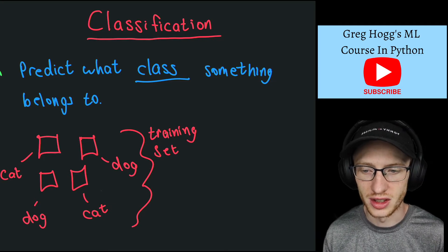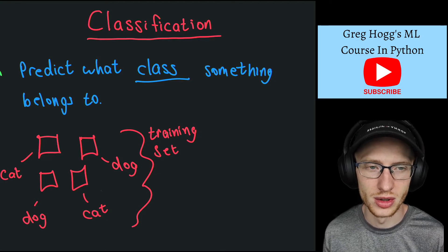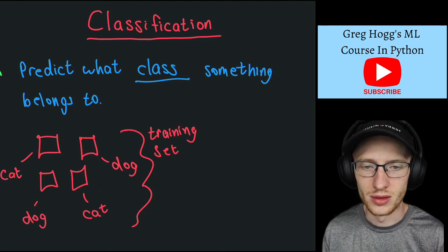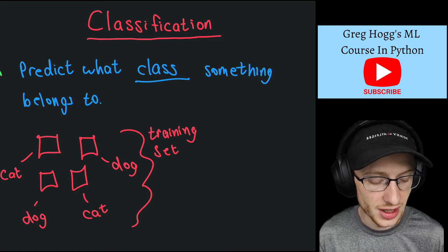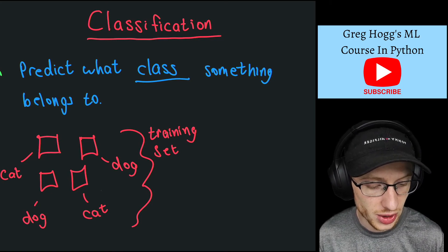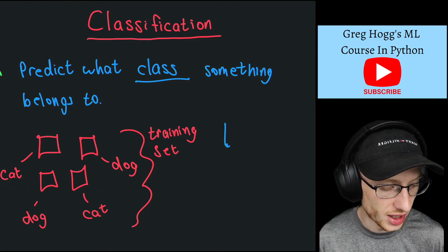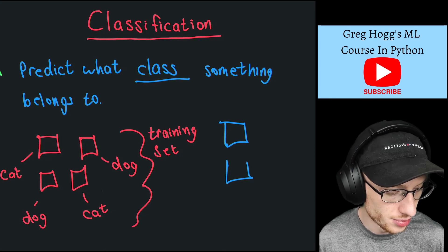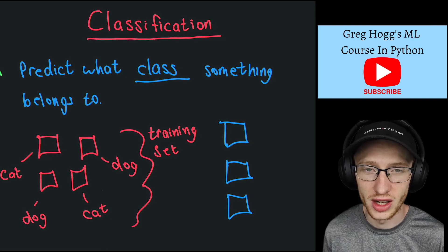We tune our model so it understands the pattern. Given whatever this picture is, it can figure out whether it's a cat or dog. In the future, we have other stuff—new pictures where we actually use our model.